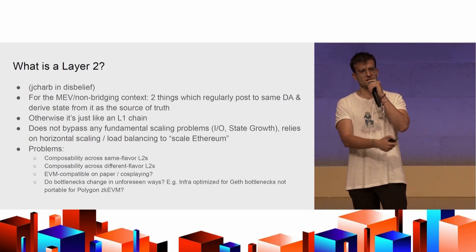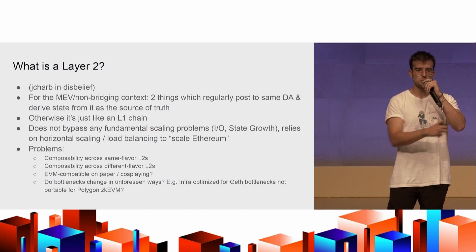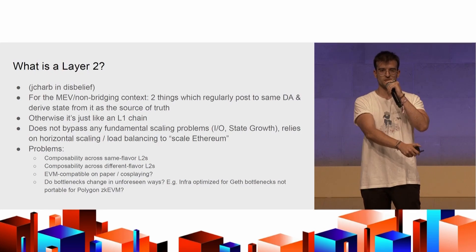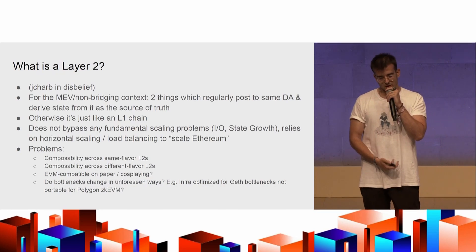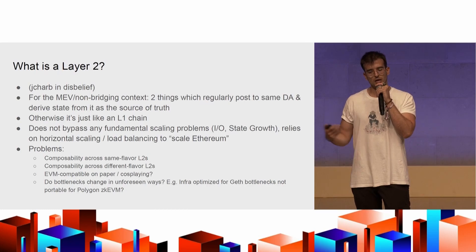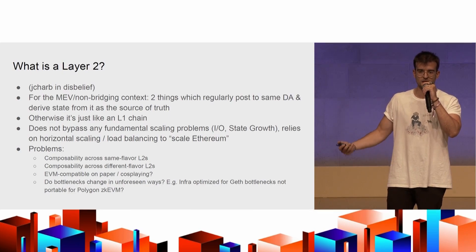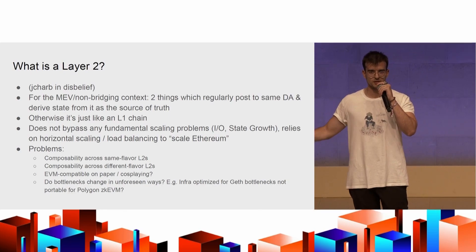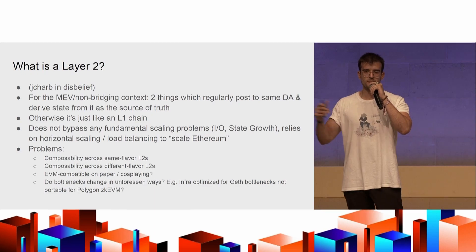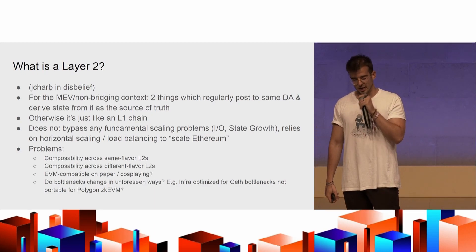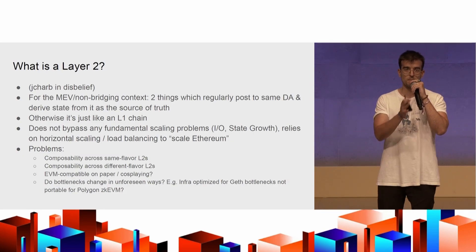Beyond that, a layer 2 is an L1. It's a chain — it has a database, a runtime, an RPC, a peer-to-peer layer, a bunch of cryptography maybe. It's a standard distributed system. We know how to optimize them. These systems bottleneck on I/O and on state growth. If what matters to you is decentralization and the ability for an individual to verify, I/O bottlenecks how fast you can sync a chain, and state growth bottlenecks how big your chain can be.